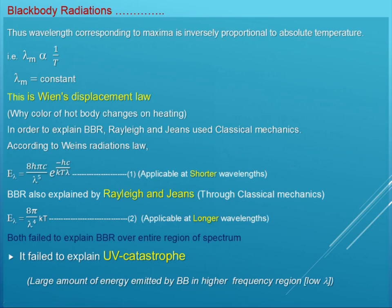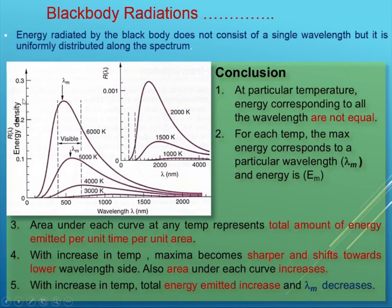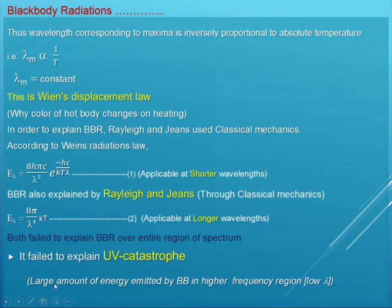Along with this, a large amount of energy is emitted by the black body in the higher frequency region — that means at lower wavelength. Why is a large amount of energy emitted at lower wavelength region? Classical mechanics has no answer. This phenomenon is called the ultraviolet catastrophe — the emission of maximum amount of energy at low wavelength side. Classical mechanics fails to explain the ultraviolet catastrophe.